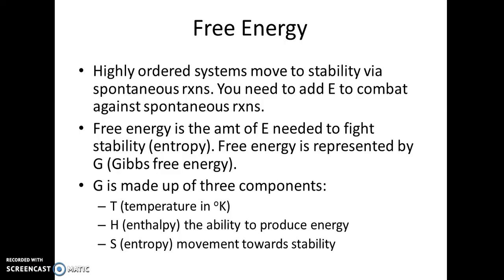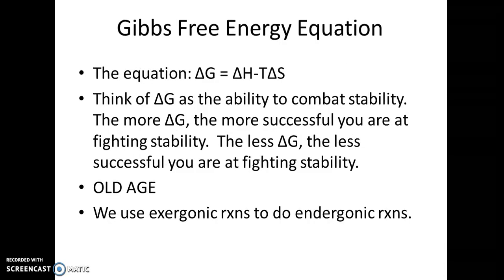Free energy is represented by the letter G, which stands for Gibbs free energy. Free energy, or G, is made up of three components: temperature in degrees Kelvin; H, which is enthalpy — for us, that's the ability to produce energy; and S, which is entropy, the movement towards stability. These three parts can be put into the Gibbs free energy equation: delta G, or change in free energy, equals delta H, or change in enthalpy, minus T times delta S.